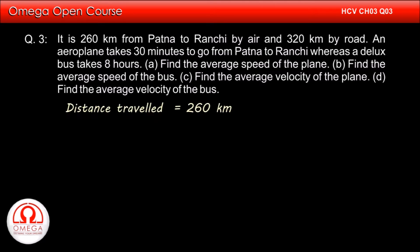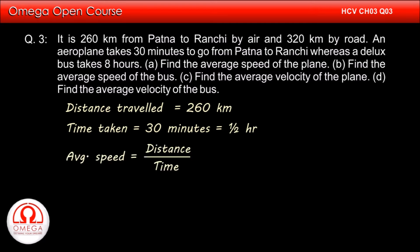Distance travelled by plane is 260 km and it takes half an hour to travel that distance. Therefore, its average speed is equal to distance divided by time taken: 260 divided by 1/2, which equals 520 km per hour. This is the answer to part A of the question.